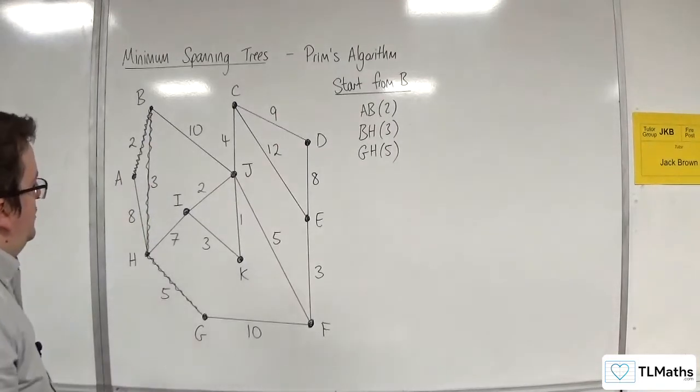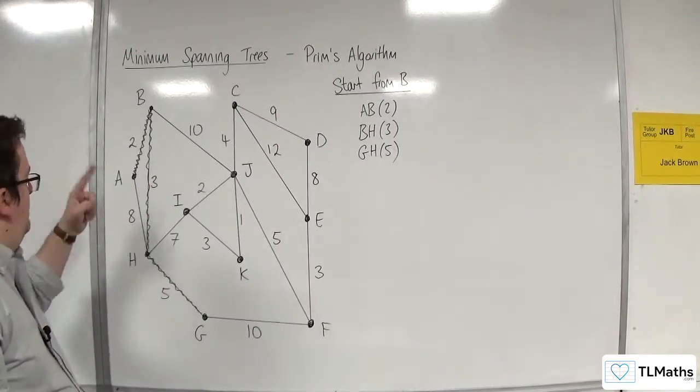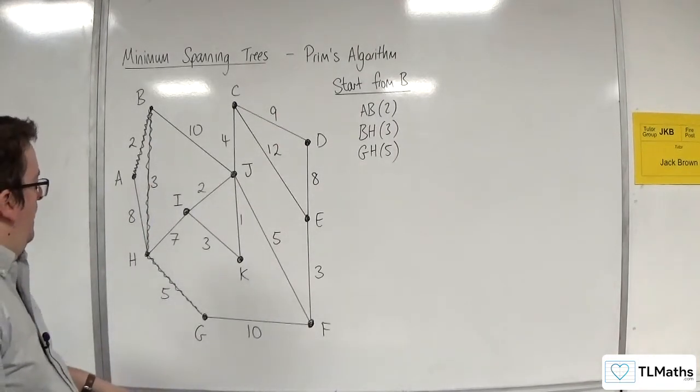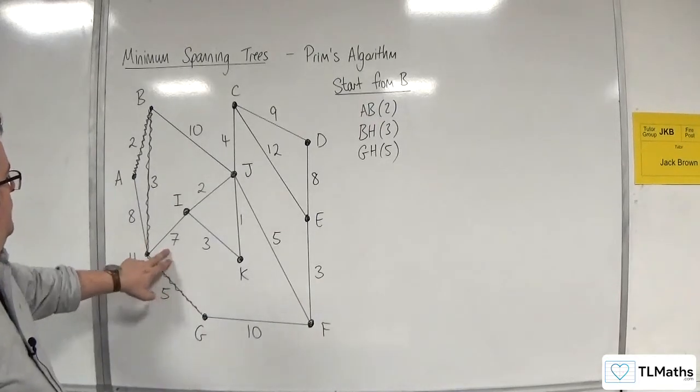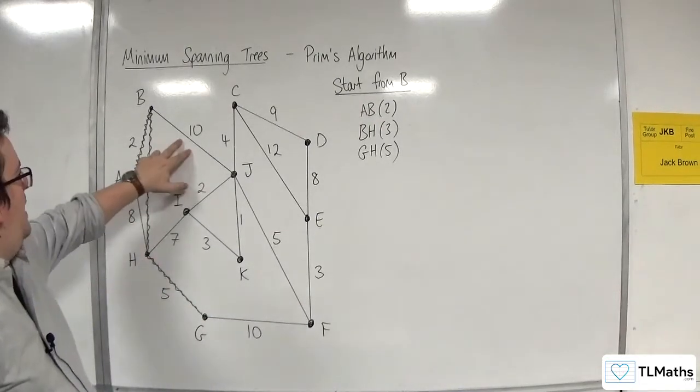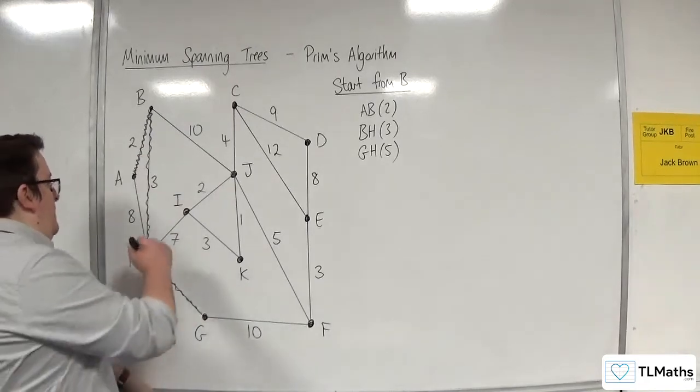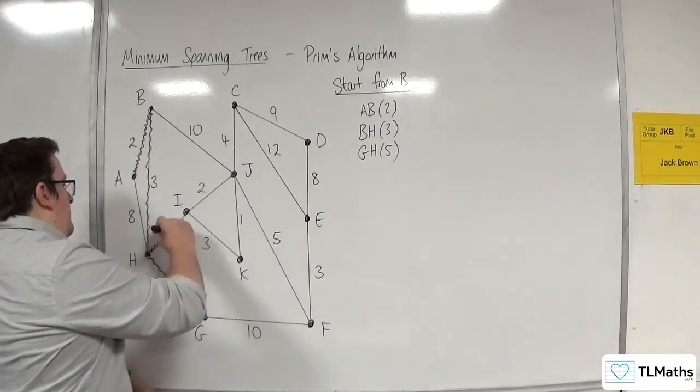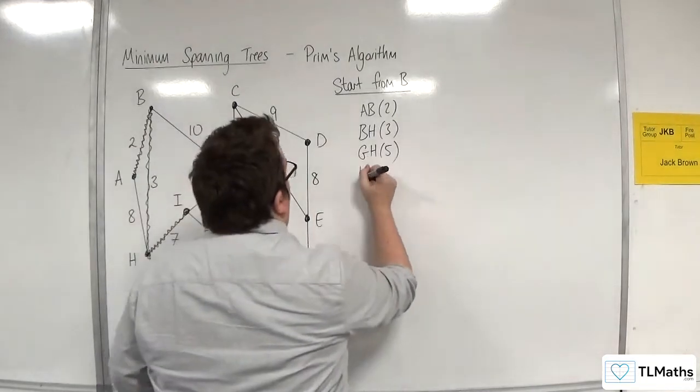Now the next shortest weight coming out of A, B, H, and G. We've got 10, 7, 8, or 10, so that would be the 7. So HI will get picked next.